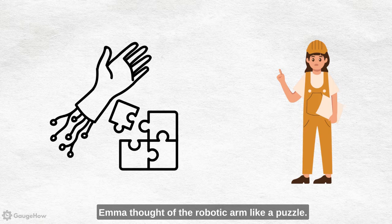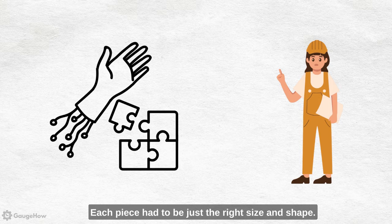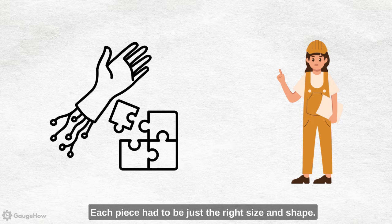So she used something called geometric dimensioning and tolerancing to make sure everything fit together perfectly. Emma thought of the robotic arm like a puzzle. Each piece had to be just the right size and shape.